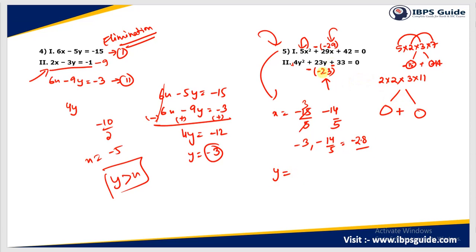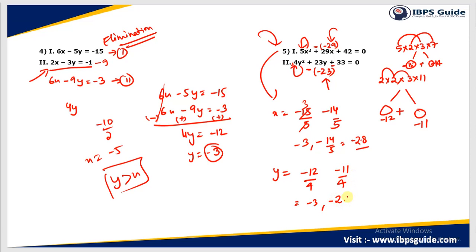For the y equation, I need two factors summing to −23. Factorizing: 3 × 2 = 6, 6 × 2 = 12, so −12 and −11 give −23. The coefficient of y² is 4, so y = −12/4 and −11/4 = −3 and approximately −2.75. Comparing: one x equals the corresponding y, but in another comparison y is greater than x, while yet another gives x greater than y. So the answer is: cannot be determined.